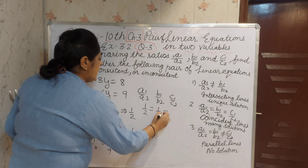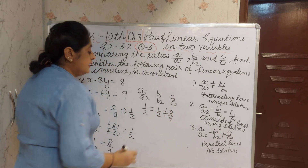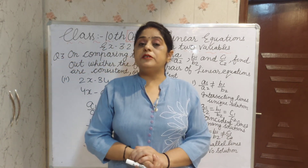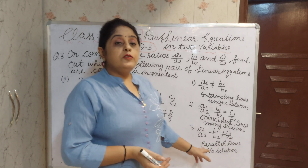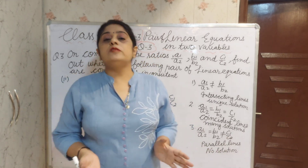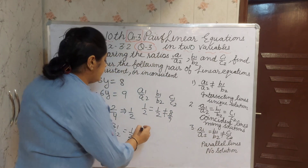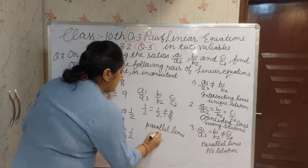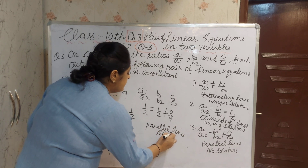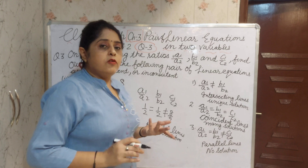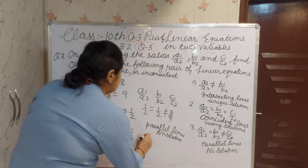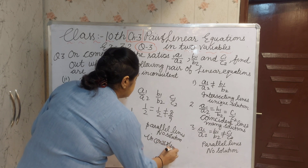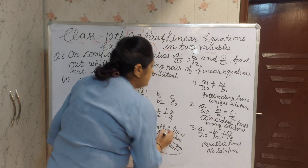1 by 2 equals B1 by B2 which is 1 by 2, but that is not equal to C1 by C2 which is 8 by 9. This is the third condition: when A1 by A2 equals B1 by B2 but not equal to C1 by C2, you get parallel lines and no solution. Since there is no solution, they are inconsistent.